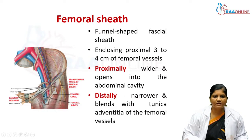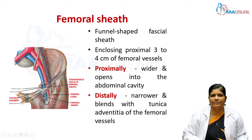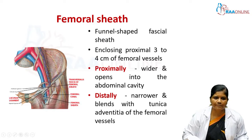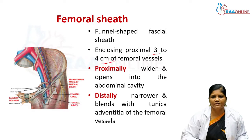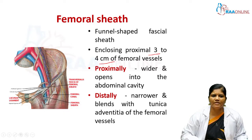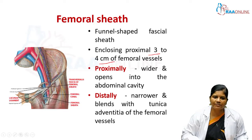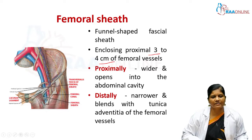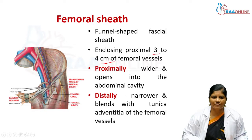The femoral sheath is a fascial sheath enclosing the upper 3–4 cm of the femoral vessels. Proximally it is wider and opens into the abdominal cavity; distally it is narrower and blends with the tunica adventitia of the femoral vessels. The anterior wall is formed by fascia transversalis, and the posterior wall is formed by fascia iliaca.